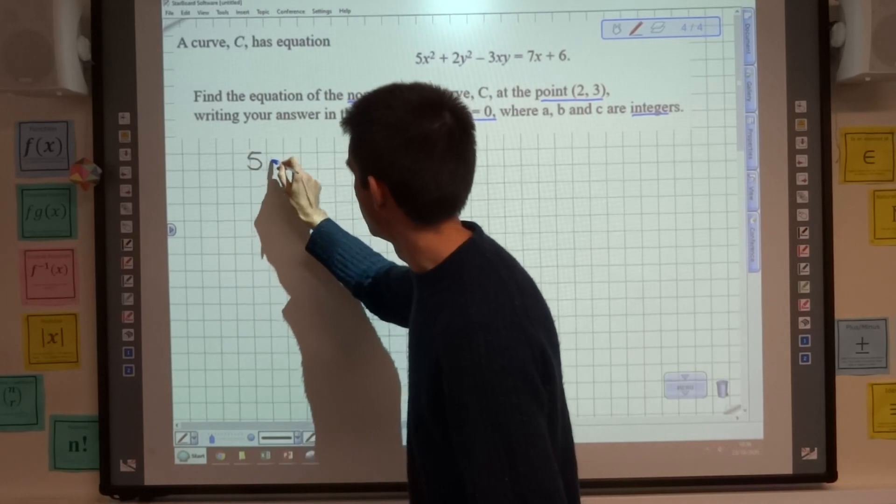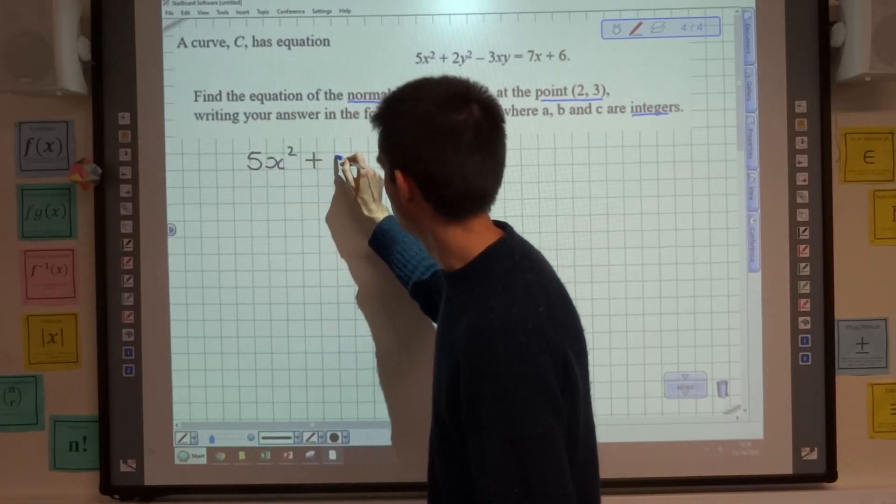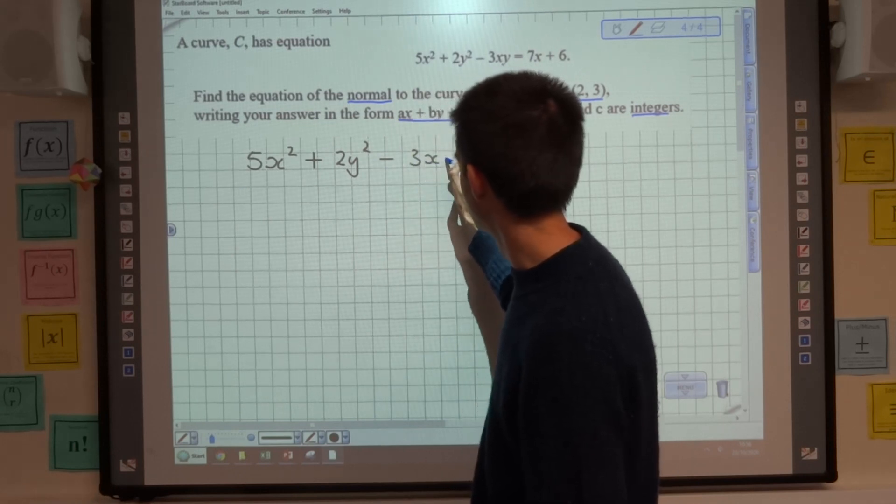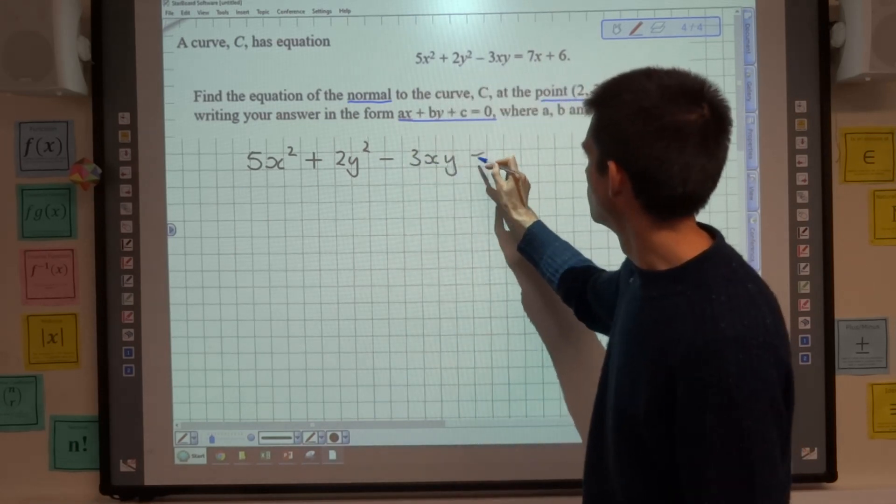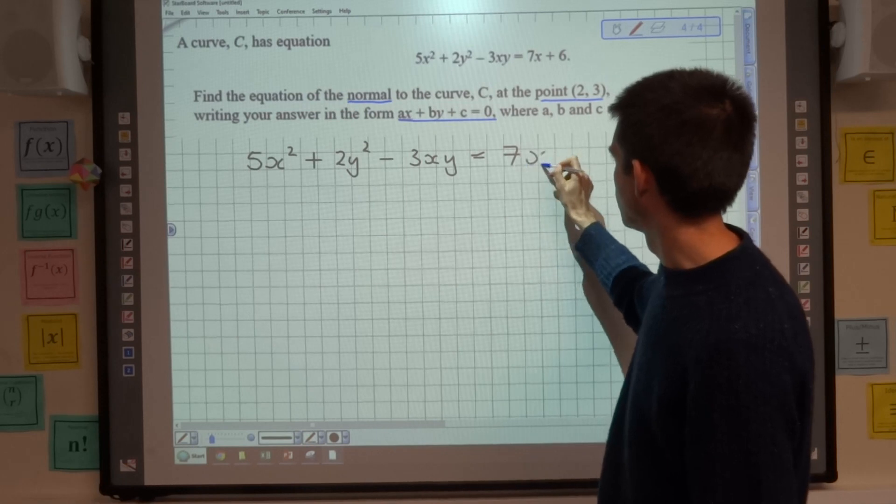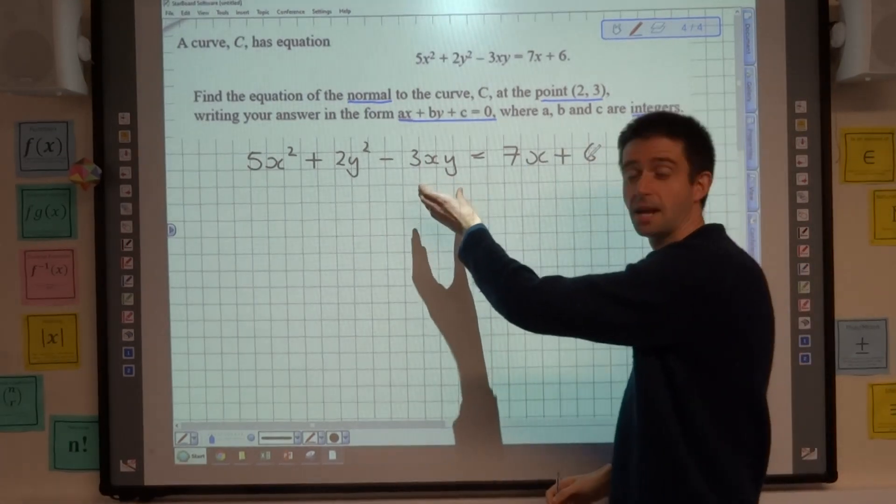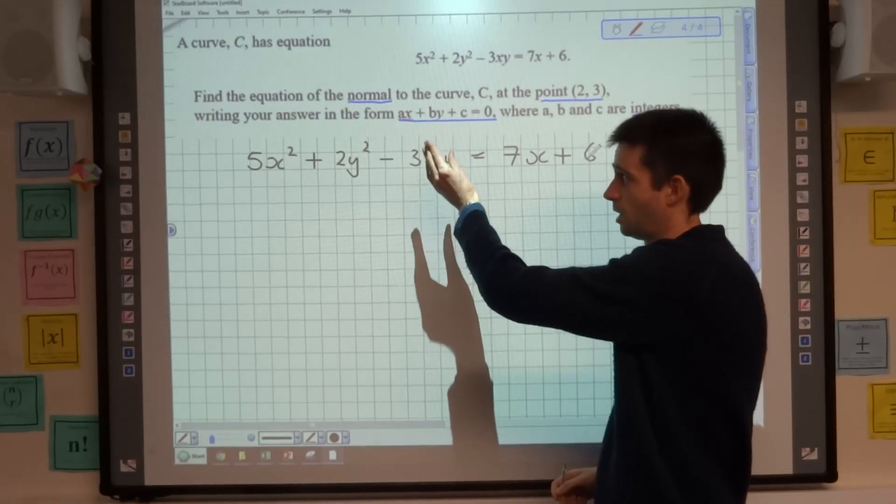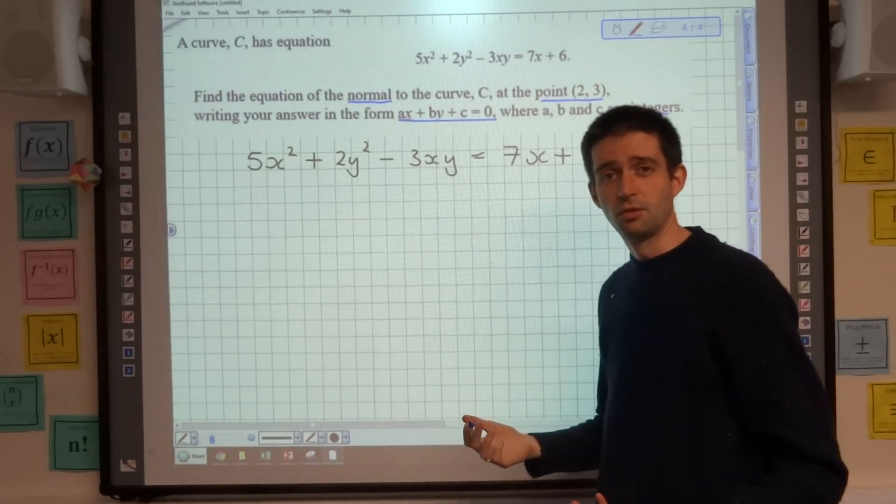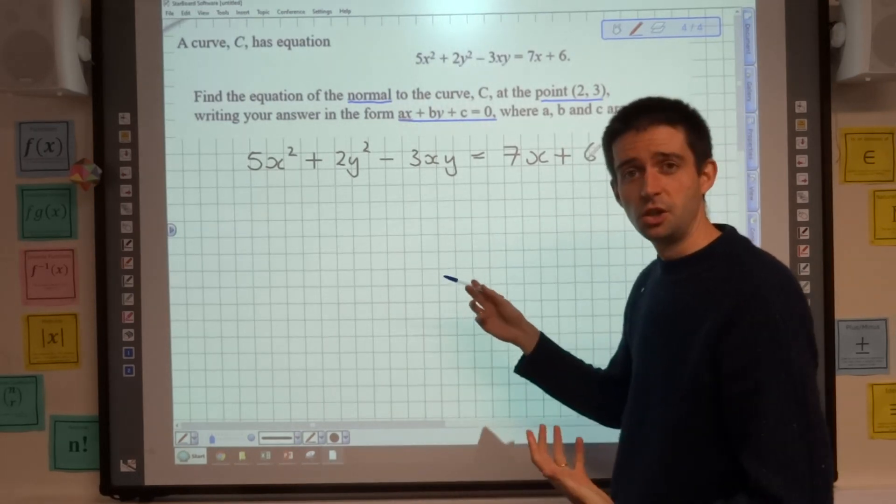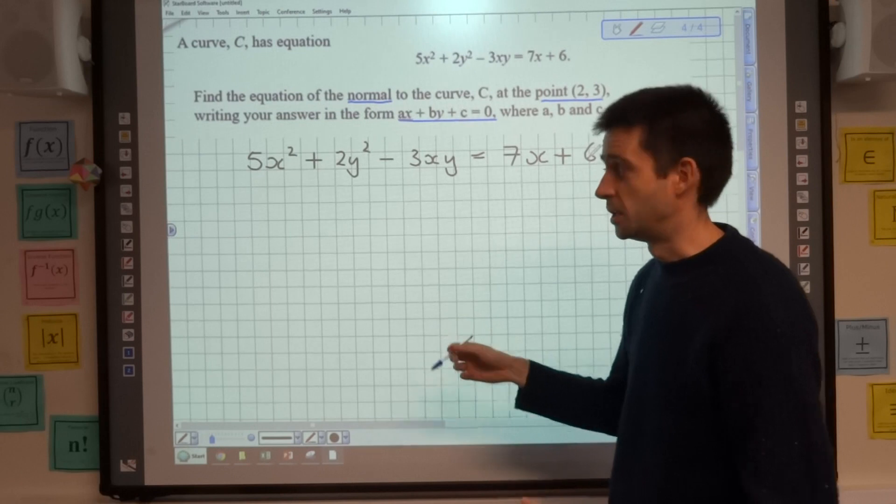We've got 5x² + 2y² - 3xy = 7x + 6. Again, as in the previous video, I've got this function here, 3xy, which I would have to differentiate using the product rule. We did that in the previous video, so I'm just going to jump straight to the result of that when I do this one.